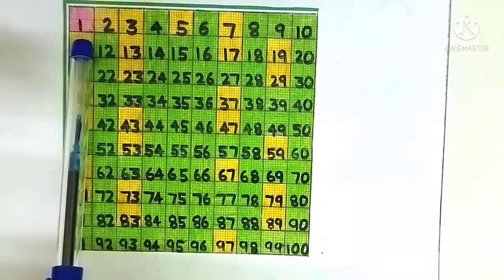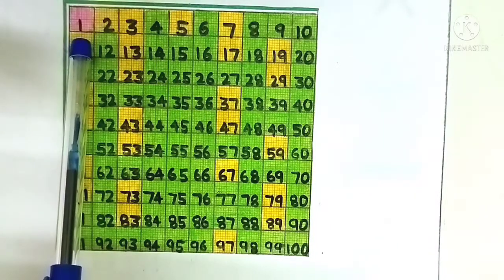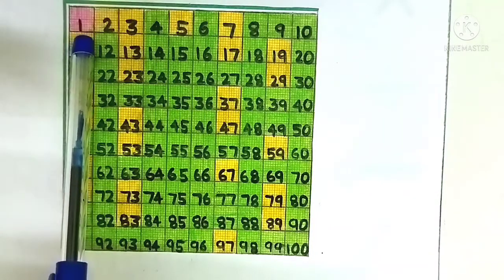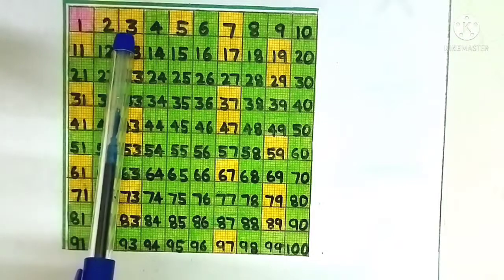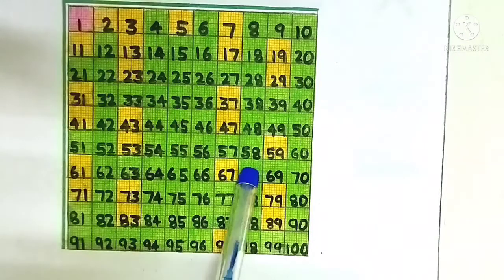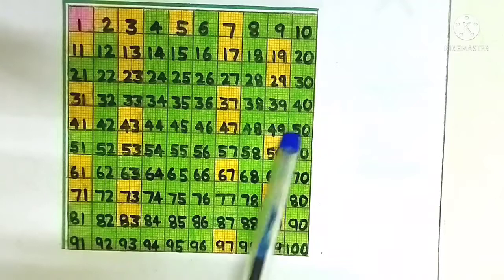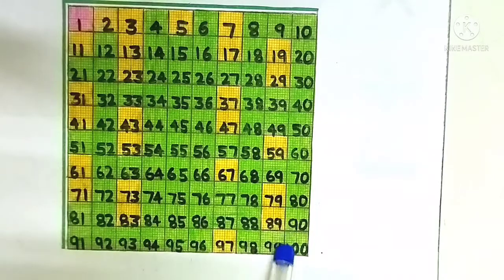In that, 1 is not prime and not composite. That's why we are using pink color. All the yellow colors are the prime numbers. Light green colors are composite numbers.